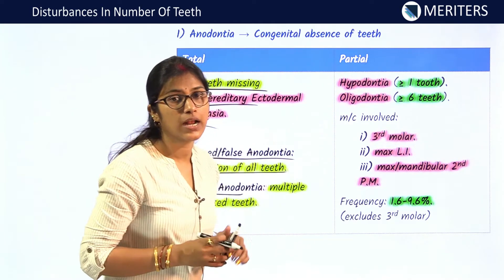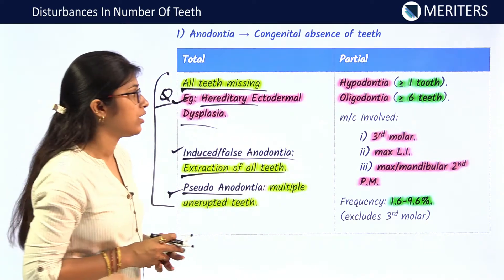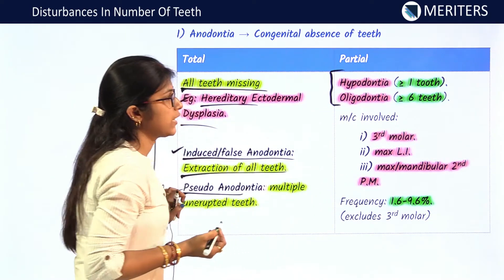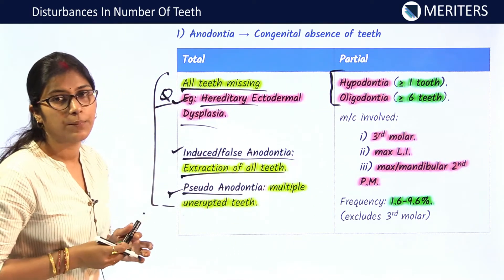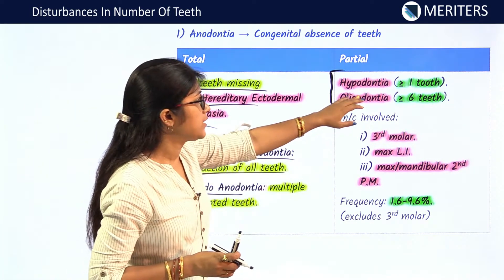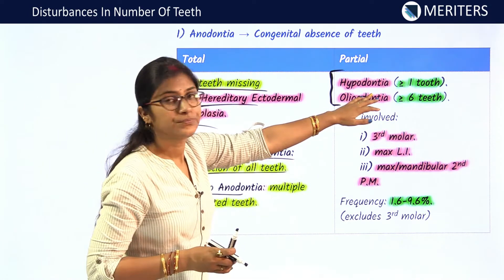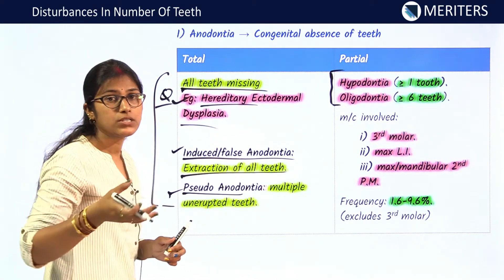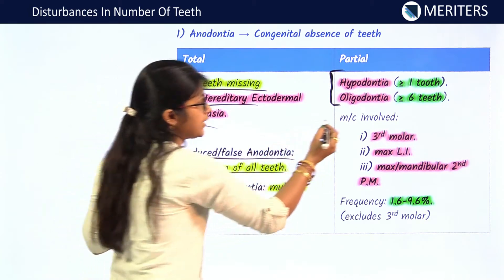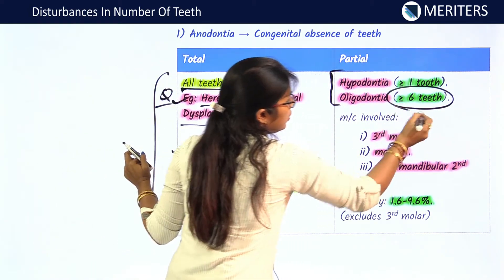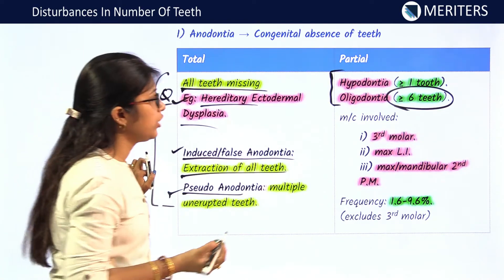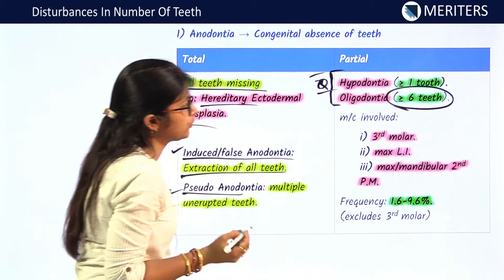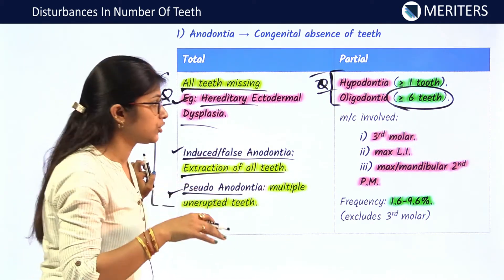Partial anodontia includes hypodontia and oligodontia. Many people get confused thinking hypo and oligo are the same, but they are different. Hypodontia is when more than one tooth is missing. Oligodontia is when more than six teeth are absent. You should be able to differentiate between oligodontia and hypodontia.